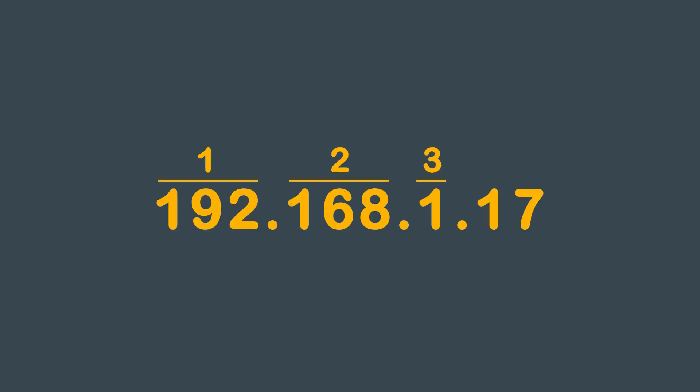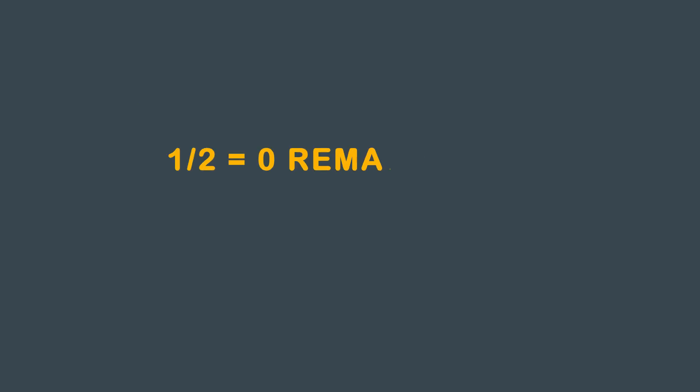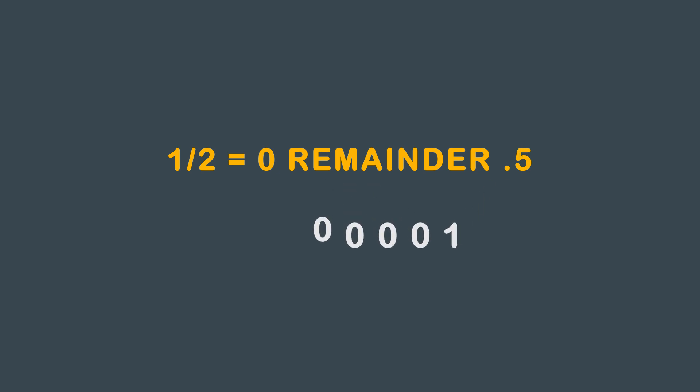Using the 1 in the third octet is easy — just take 1, divide that by 2, you get 0 and you have a remainder of 0.5. There's no reason to go any further as preceding zeros are irrelevant. You get 0, 0, 0, 0, 0, 0, 0, 1 — or just 1.